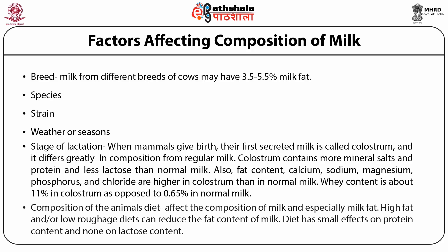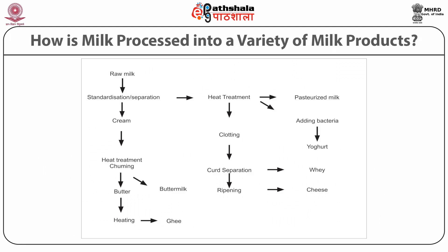Similarly, the stage of lactation of the animal also has an effect on the composition of milk. Animals produce colostrum or thick milk within a week after gestation. This thick milk is generally high in protein but it cannot be heated because heating causes its coagulation.